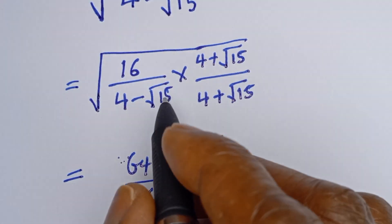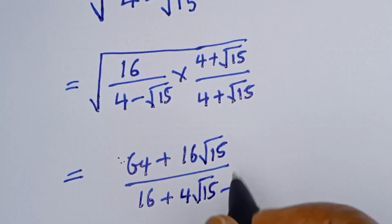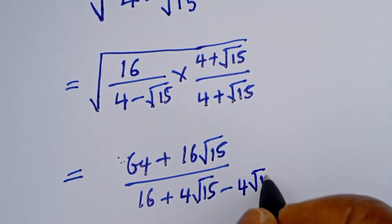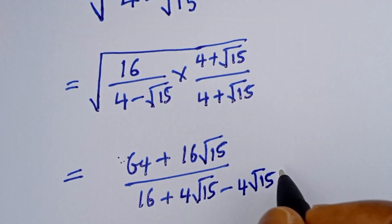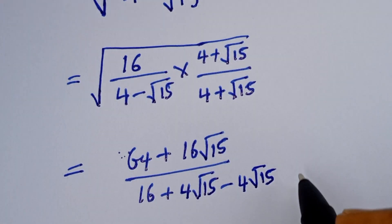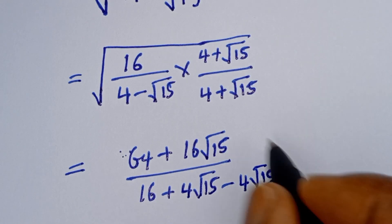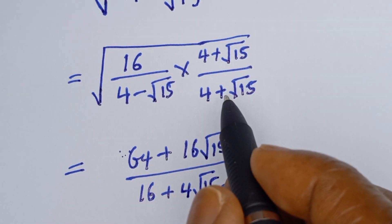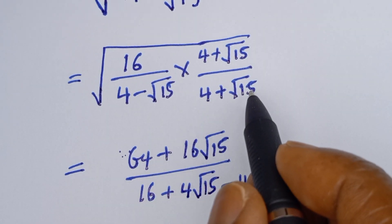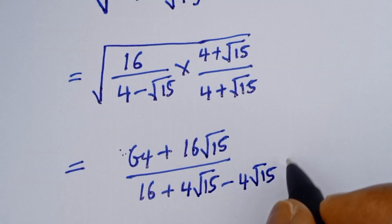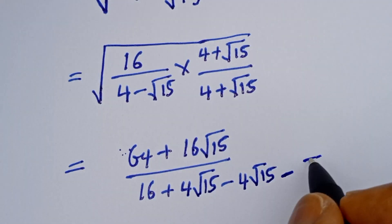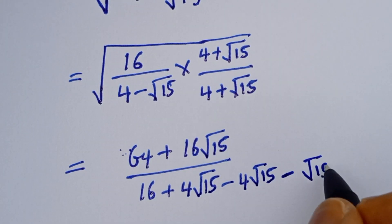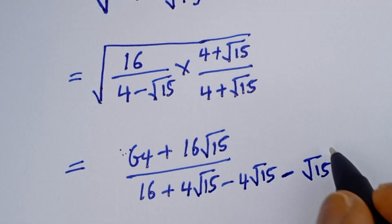Minus root 15 times 4, that is 4 root 15, then minus root 15 plus root 15, and this will be minus root 15 squared.